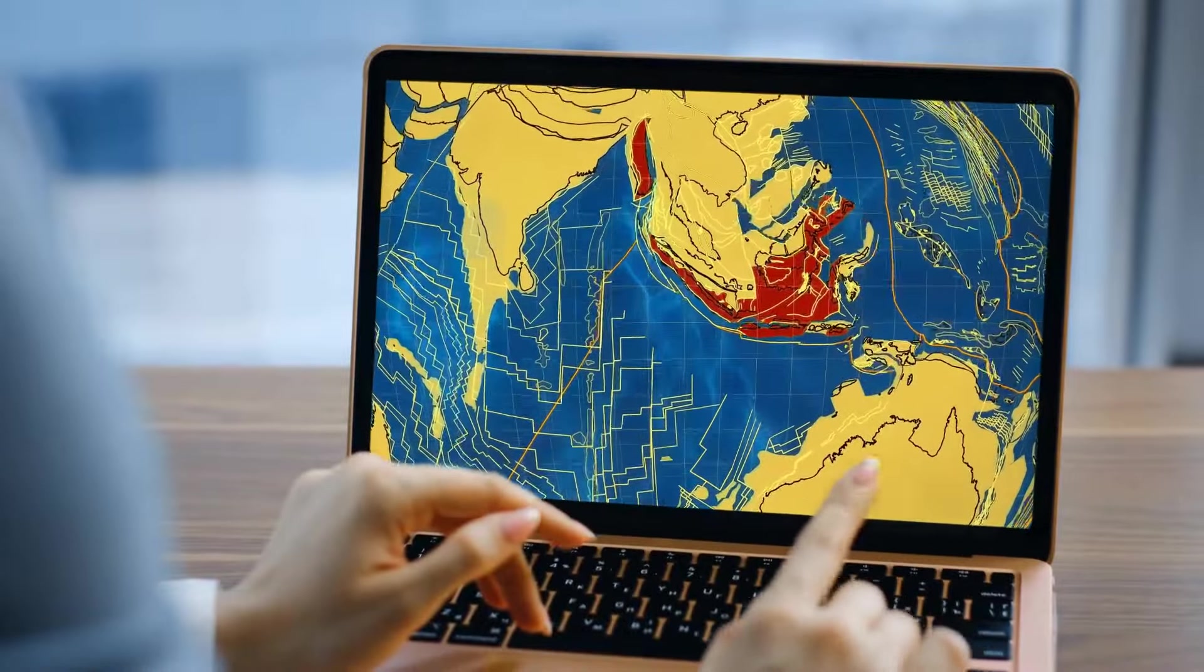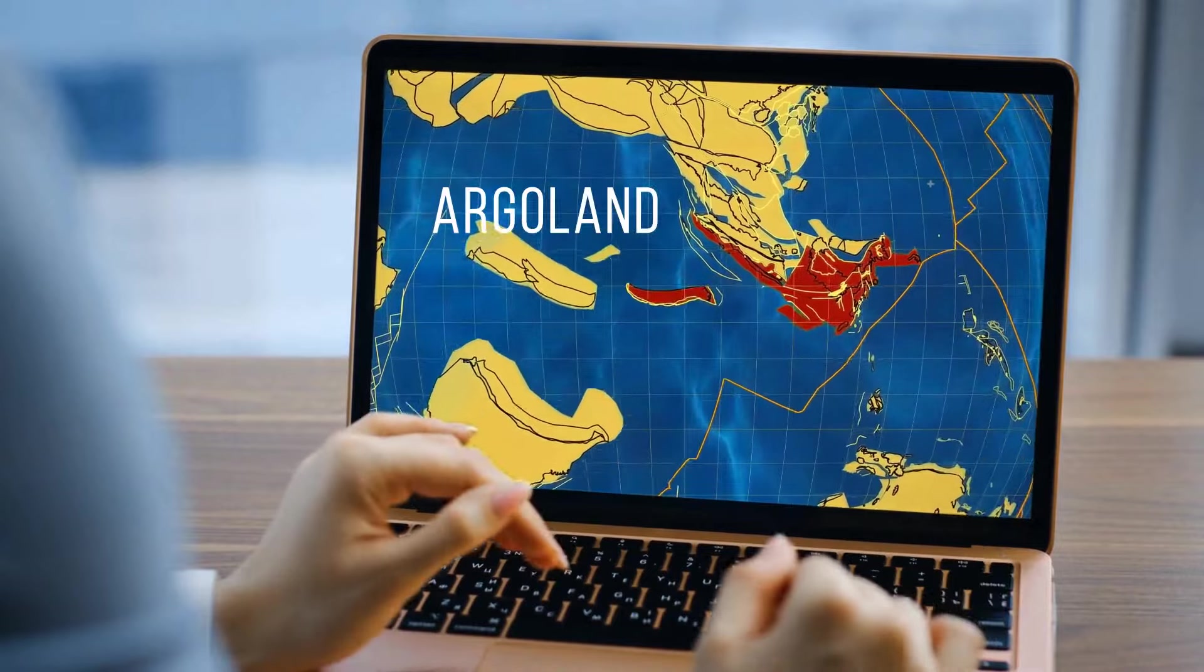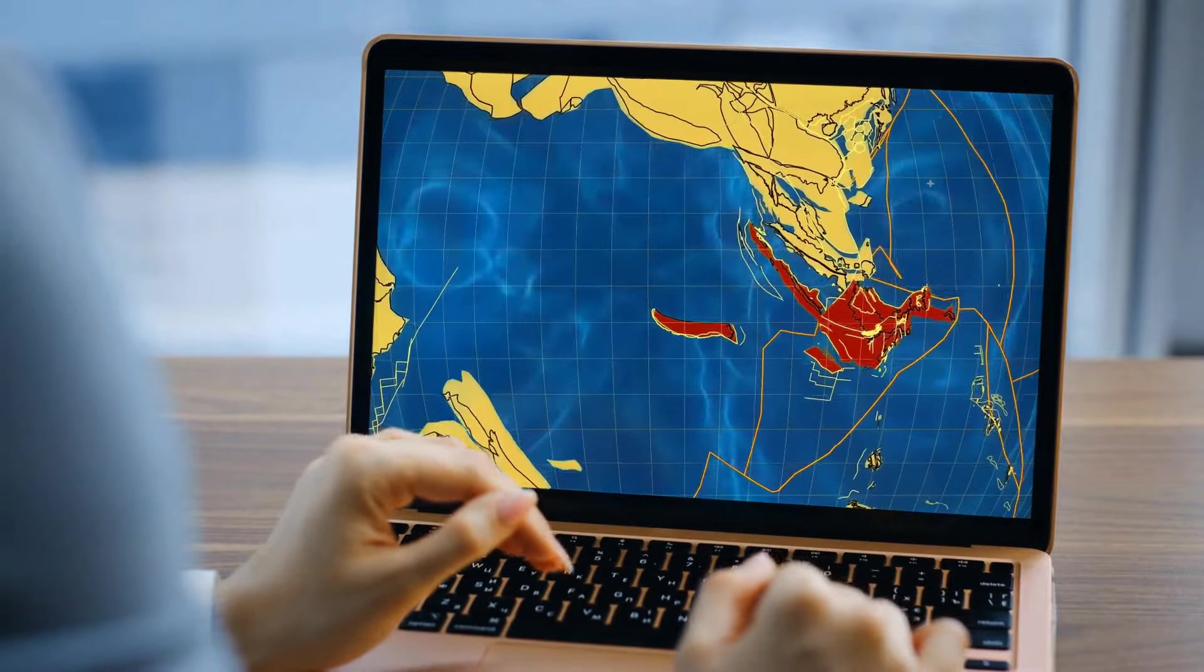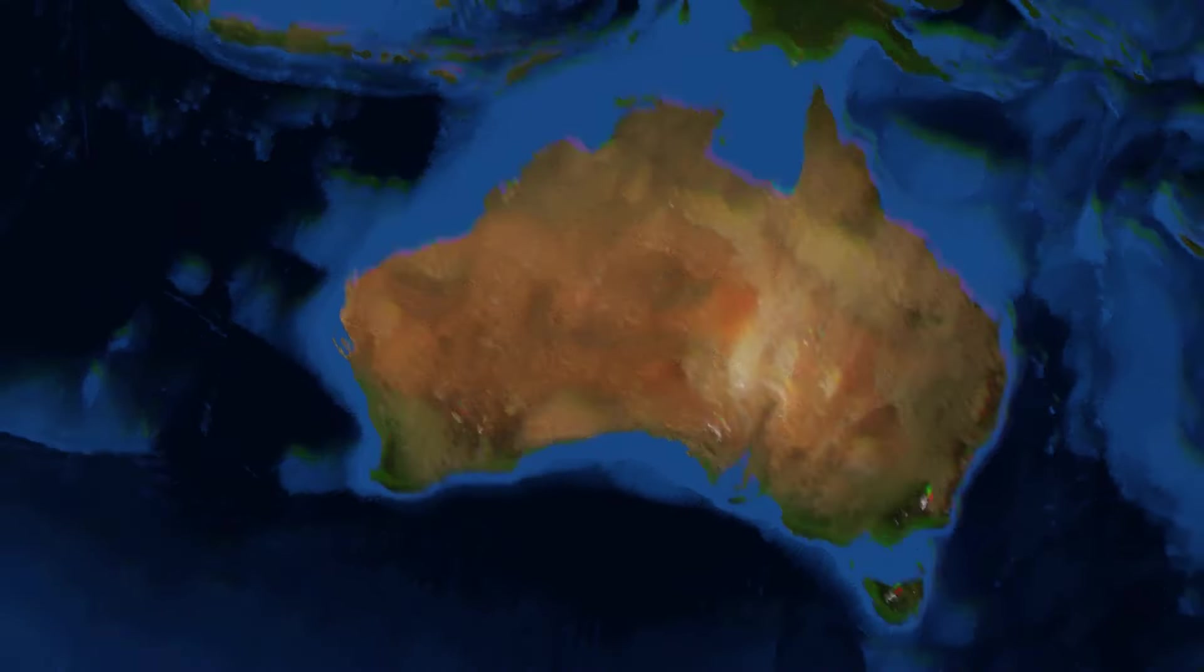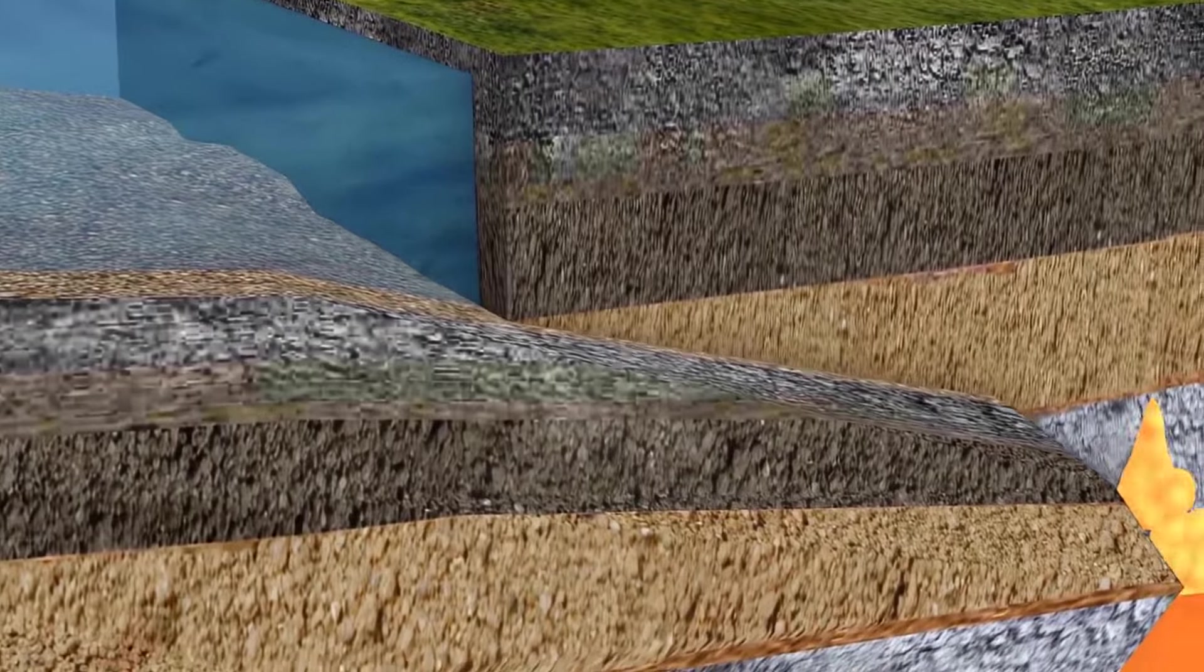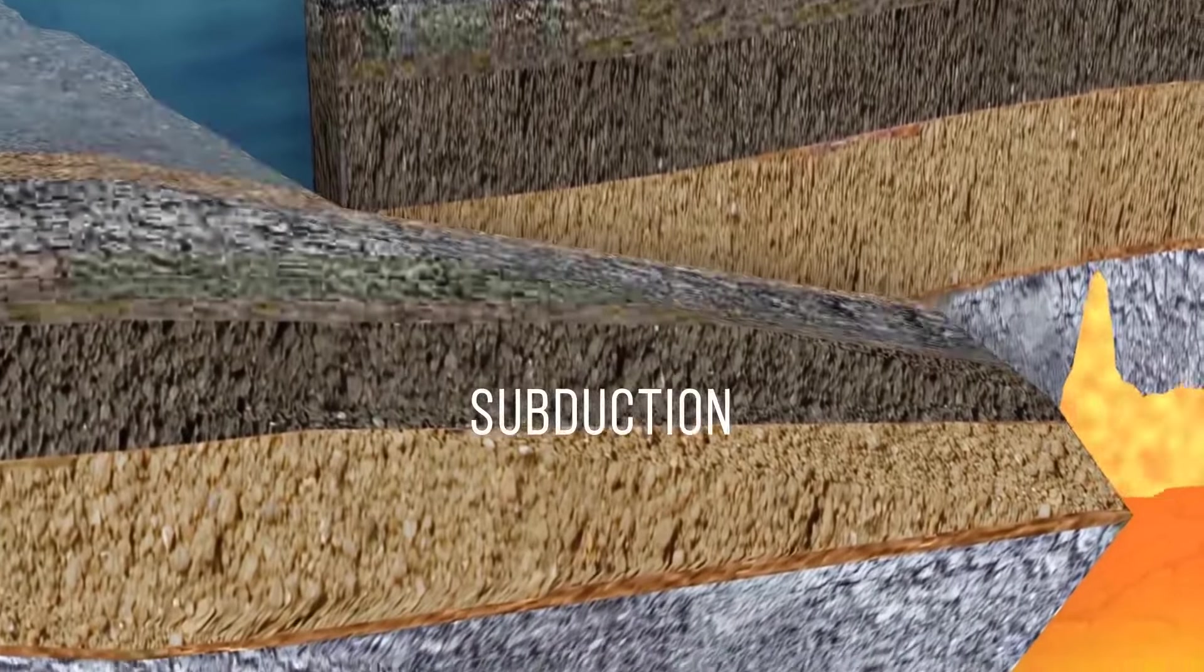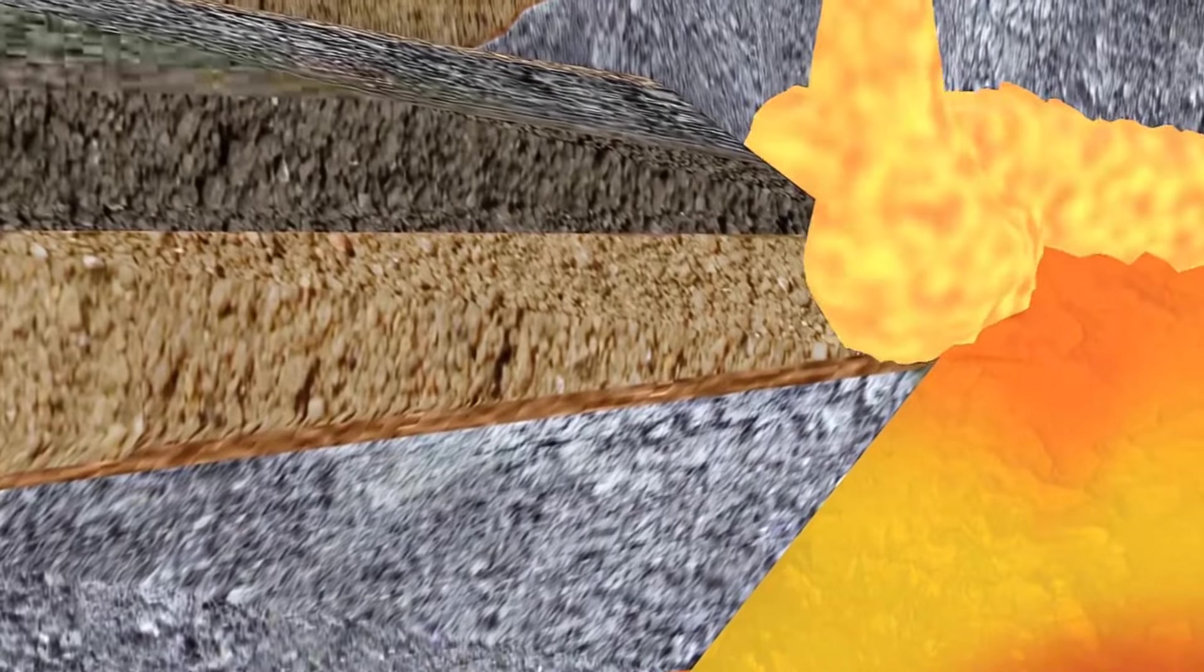Back in the Jurassic period, this vanished continent, which scientists started calling Argo Land, vanished and left a hole in Australia, now known as the Argo Abyssal Plane. Geologists initially believed this was all due to a process called subduction. It's when one piece of the Earth's crust dives under another and recycles it into the planet's mantle.